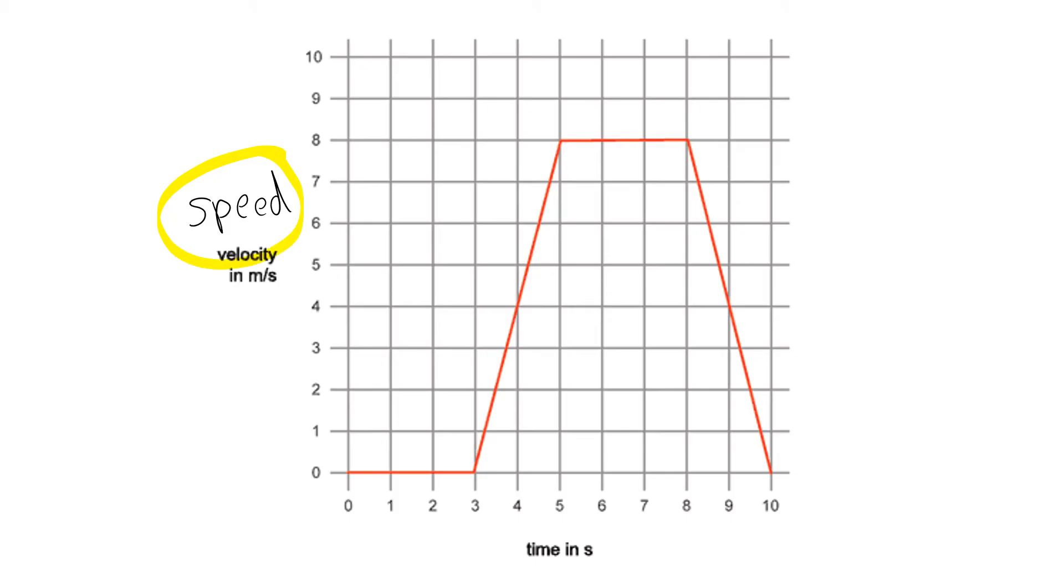And what I mean by it's basically speed here is velocity is just the direction of speed. So it's basically the same for our purposes right now. So I've got speed on my y-axis and I've got time on my x-axis, just like before, right? Time is going to be on the x-axis.